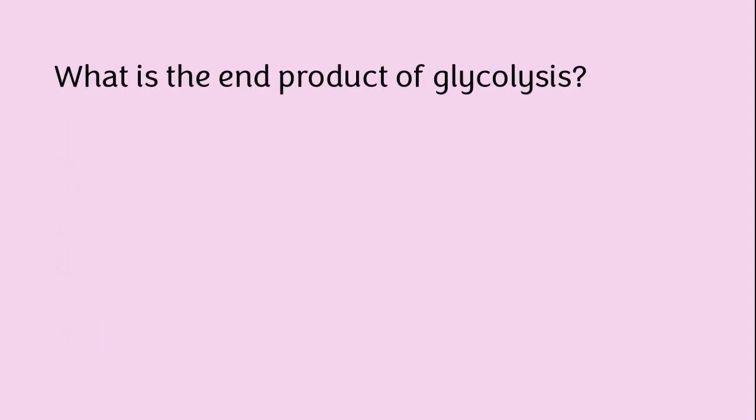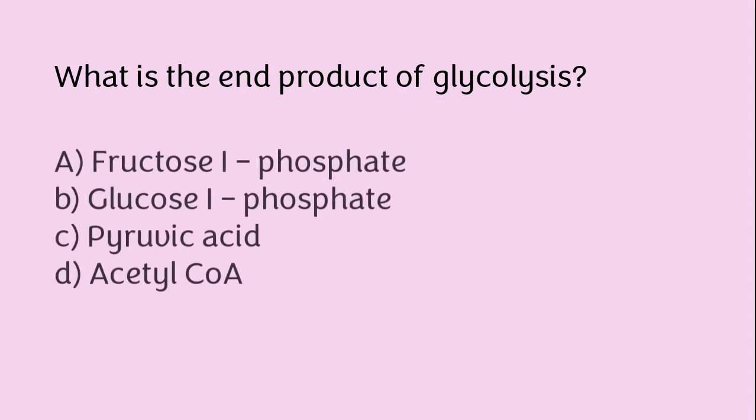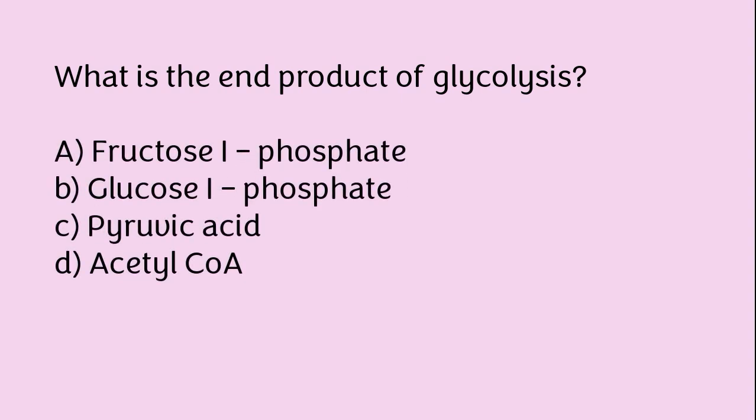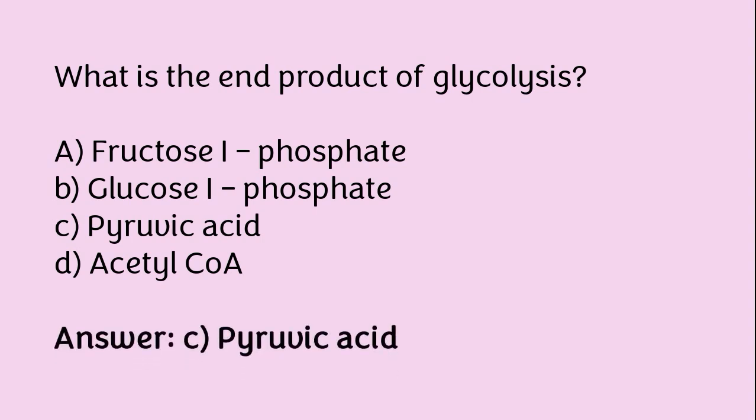What is the end product of glycolysis? Fructose 1-phosphate, glucose 1-phosphate, pyruvic acid, or acetyl-coenzyme A? The correct answer is option C. Pyruvic acid is the end product of glycolysis.